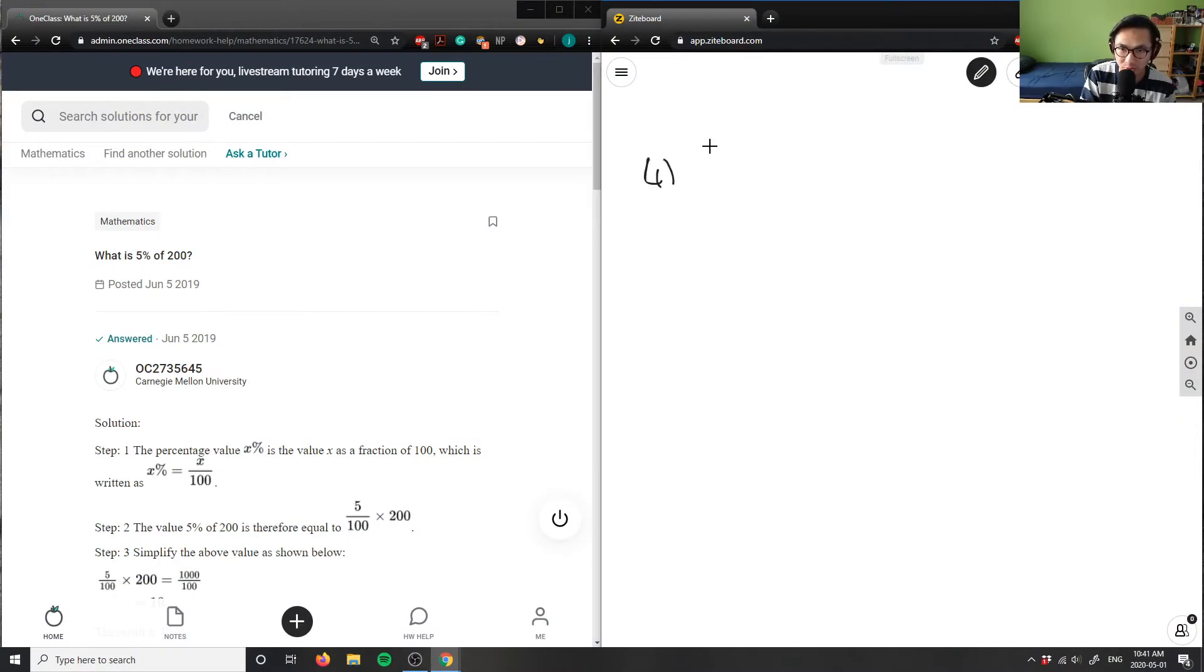What is 5% of 200? In order to solve this problem, I'm going to change the percentage into a decimal. So I have 5%, and I'm going to divide it by 100, because percentages are always out of 100.